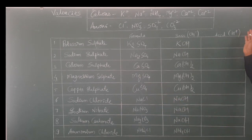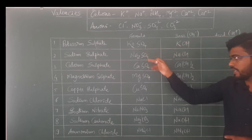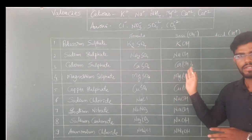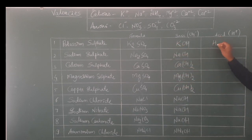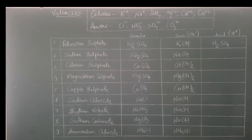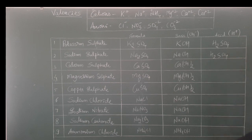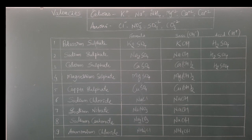Next, you attach H⁺ to the remaining anionic part of the salt. Sulfate combined with H⁺ gives H₂SO₄. Again sulfate gives H₂SO₄. And again sulfate — so it is H₂SO₄ once more.